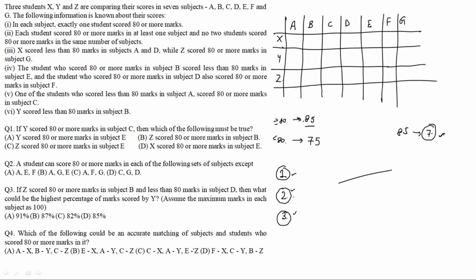The total so far accounts for 1 + 2 + 3 = 6 occurrences of 85. The seventh 85 must go to one of the three students. The only valid distribution is 1, 2, and 4 — meaning among X, Y, and Z, one gets 85 four times, one gets it two times, and one gets it one time. Now moving to the next condition: X scored less than 80 in subjects A and D, so those entries are 75.